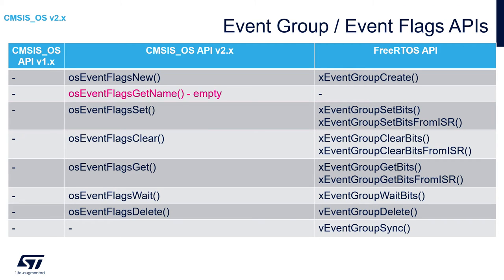Looking at differences among APIs regarding event groups: in FreeRTOS this mechanism is called event group; in CMSIS OS version 1 it is not implemented; and in CMSIS OS version 2 it is called event flags. As with other CMSIS OS functions, there is no separate function for thread and IRQ execution — this is checked within the function and the appropriate FreeRTOS API call is made.